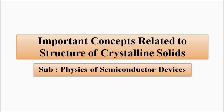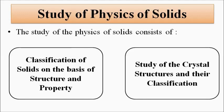Let us have a quick recap. The study of the physics of solids can be done in two ways: first, the classification of solids on the basis of their structure and property, where we study the crystal structure and properties; and second, the structure of the crystals and their further classification into various types. We covered amorphous and crystalline, isotropic and anisotropic.